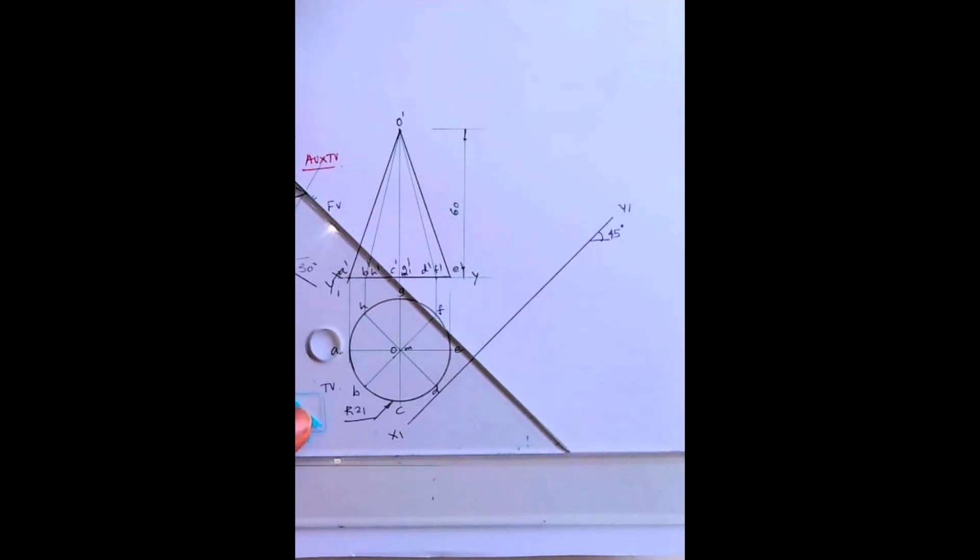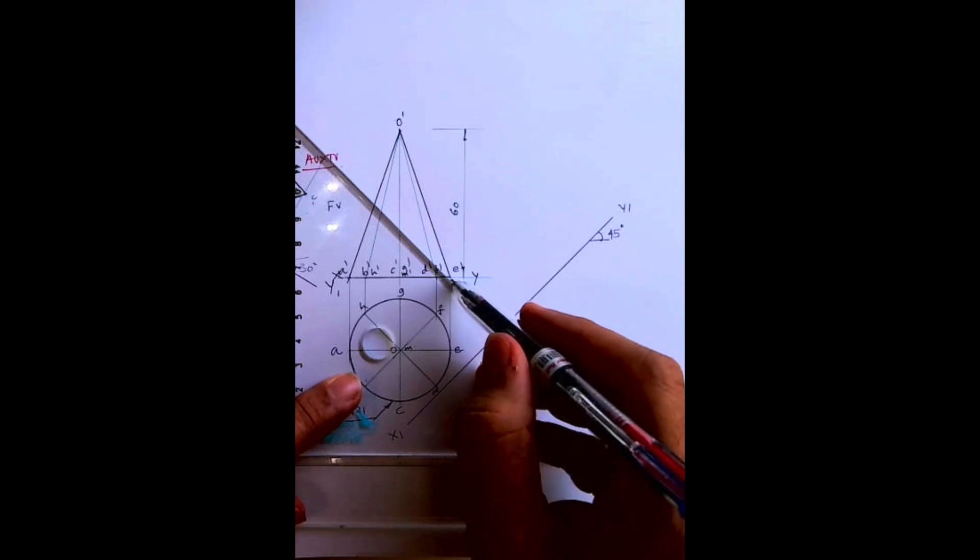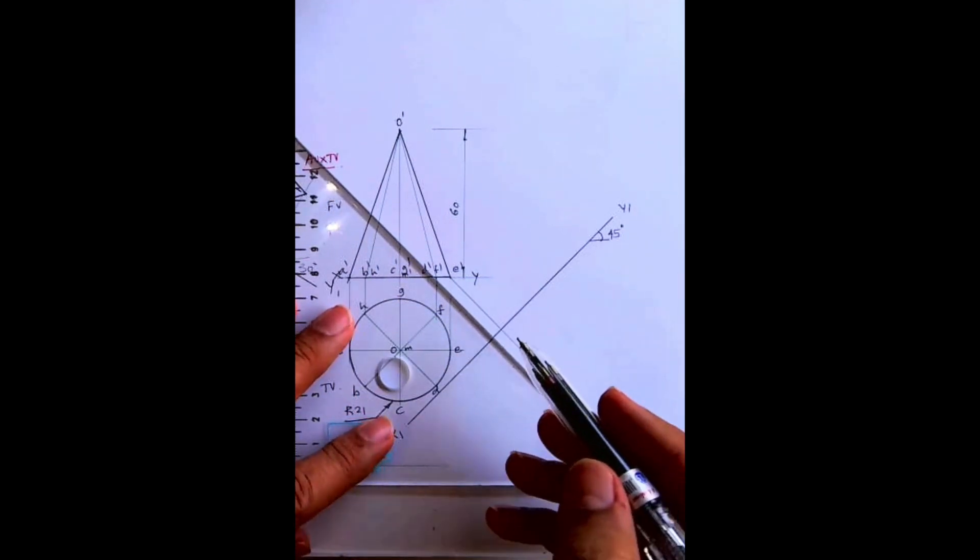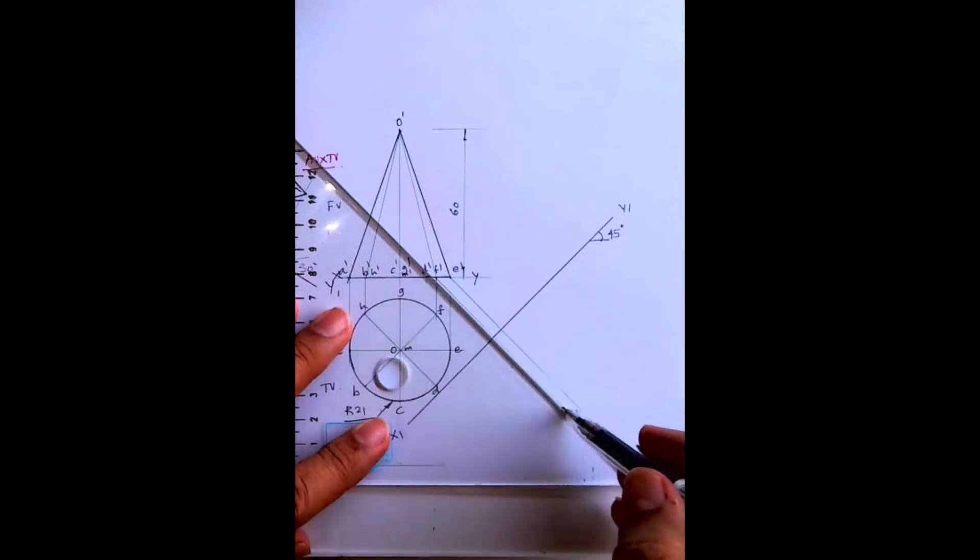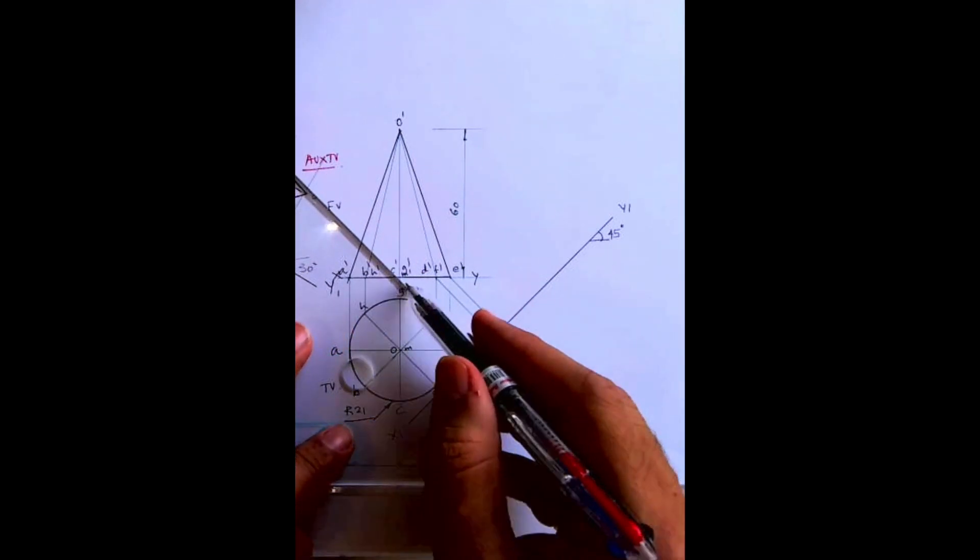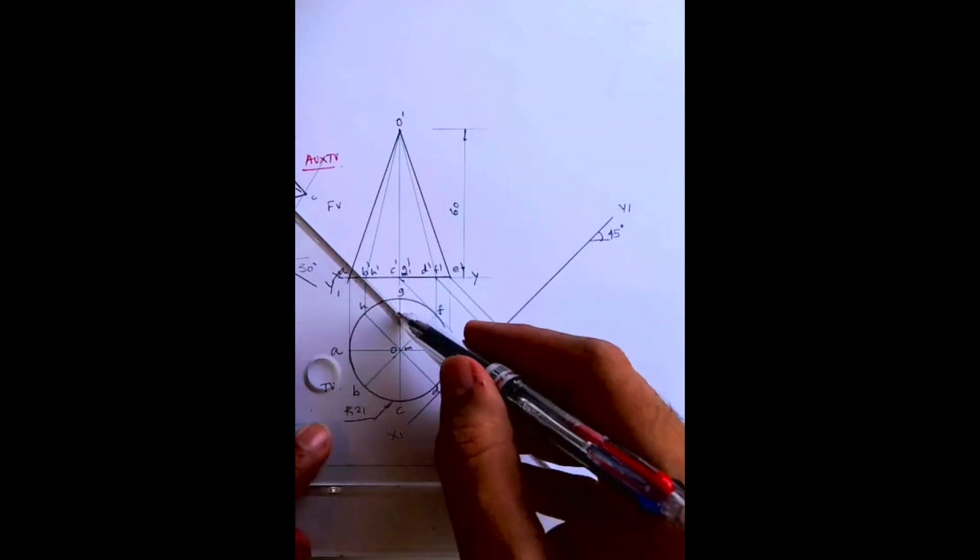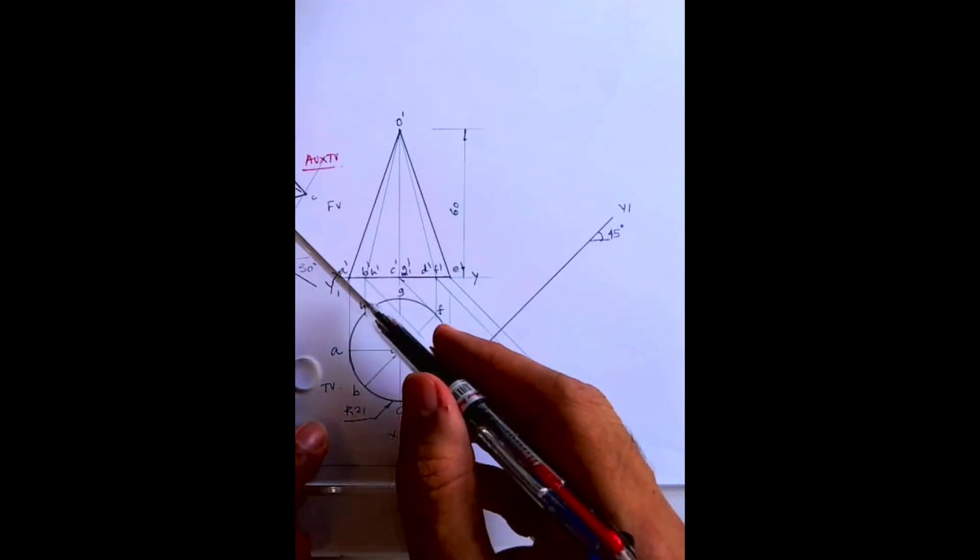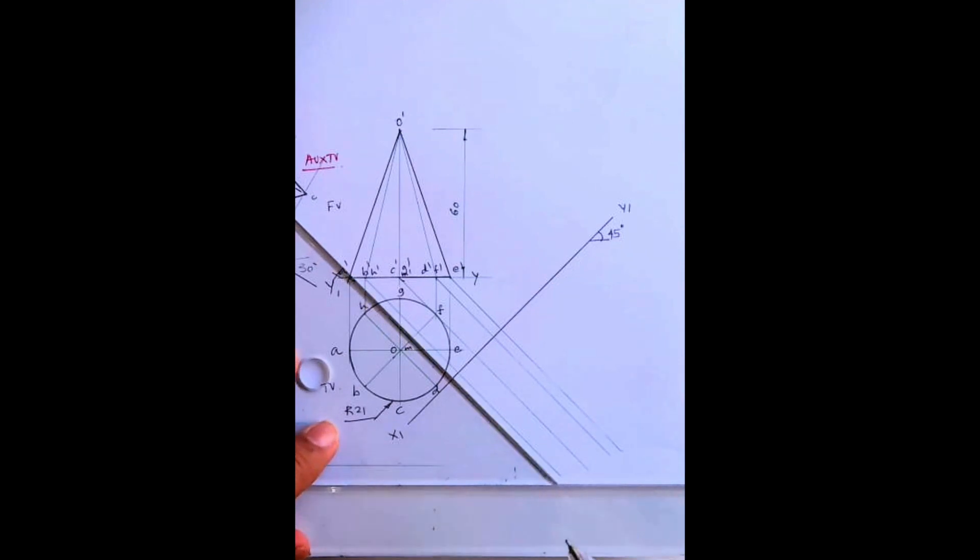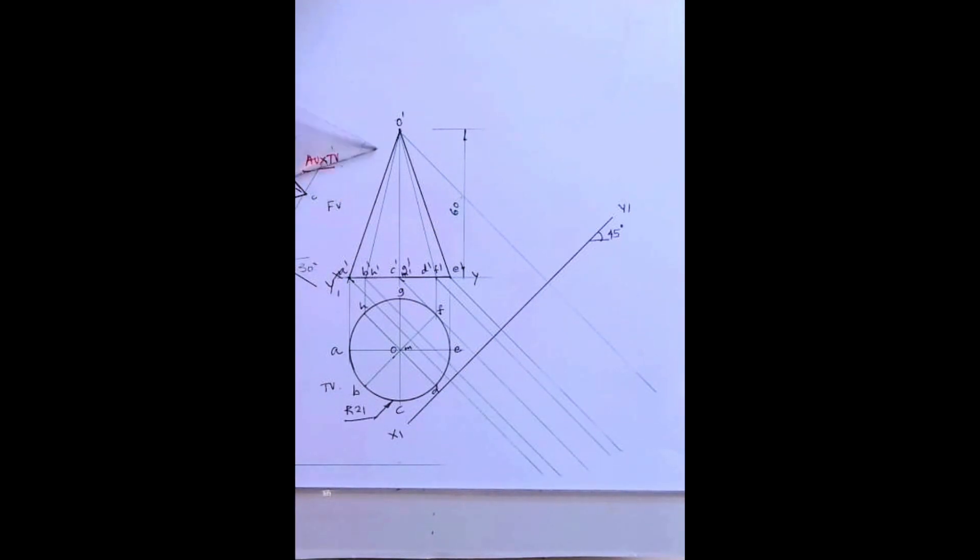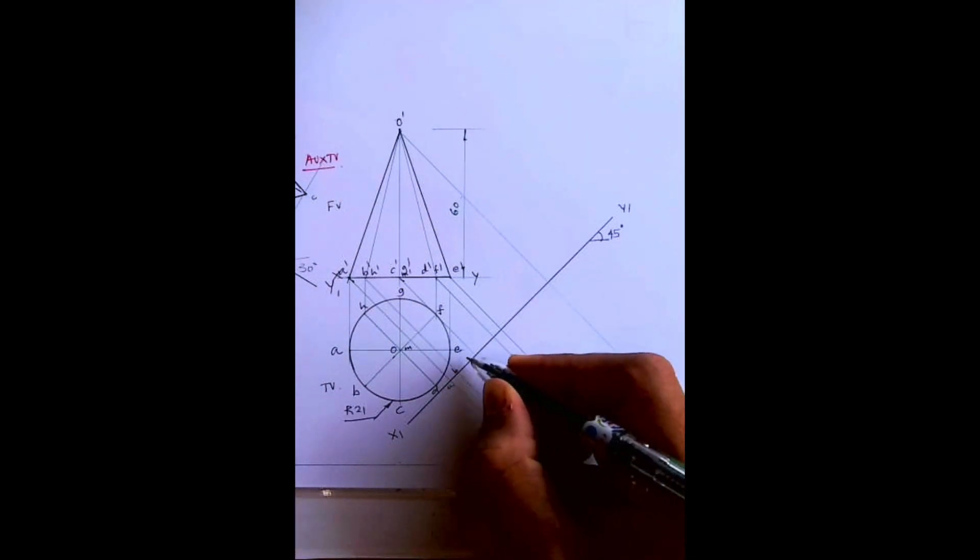Now after this we have to draw auxiliary. The auxiliary will be at what angle? 45 degree, because we are doing first angle. So draw 45 degree from e dash, d dash, f dash. So from all these points you draw 45 degree.